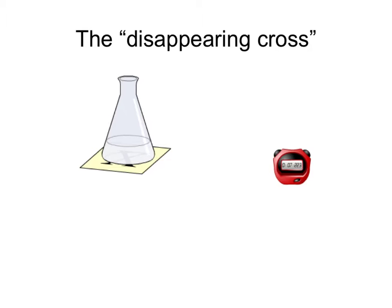A typical reaction used in schools to investigate the effect of concentration is this one, which is the disappearing cross experiment. Inside the flask we have a mixture of sodium thiosulfate and acid, and by changing the concentration of the sodium thiosulfate and timing how long it takes for the cross to be obscured by precipitative sulphur, we can see the effect of a change of concentration on the time taken for the reaction and therefore on the rate of the reaction.